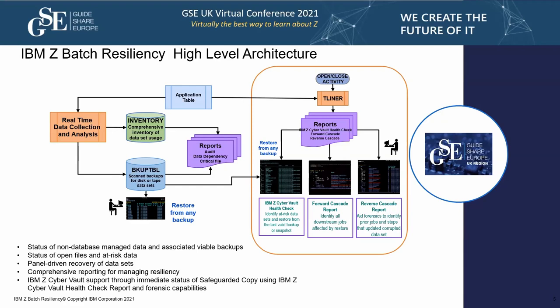We also have something called the CyberVault Health Check Report, which shows — in the event of a catastrophic outage — which datasets were open for output. In a catastrophic outage we'd be doing a complete recovery, maybe from a safeguarded copy, rather than just a surgical recovery of individual datasets. This can show where we need to pay more attention to particular datasets being recovered. This is all done using panels, and I'll do a quick demo of that as well.